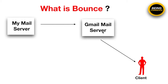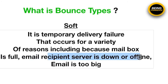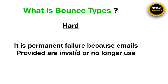For example, when my mail server sends a message to Gmail, maybe my client's Gmail mailbox is full, or his server is down or offline, or the email is too big — and because of that, this soft bounce happens. A hard bounce means it is a permanent failure because the email address provided is invalid or no longer used.